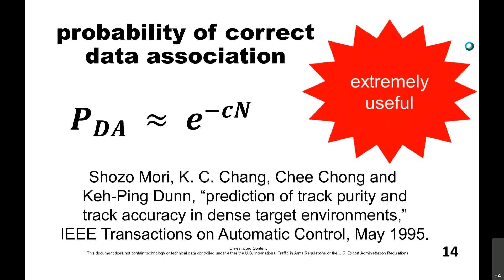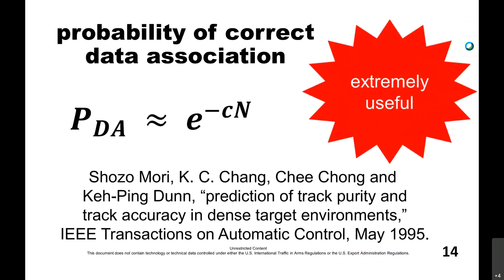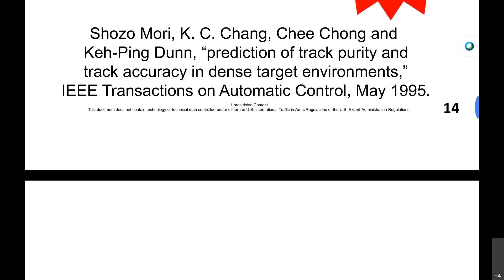If you'd like to know where this simple back-of-the-envelope formula comes from, there's a reference to an IEEE paper published 25 years ago. I would say this formula is extremely useful — I've used it many times in dramatic, important situations like this. If you have any notion of doing multiple-target data fusion, it may be very useful for you.